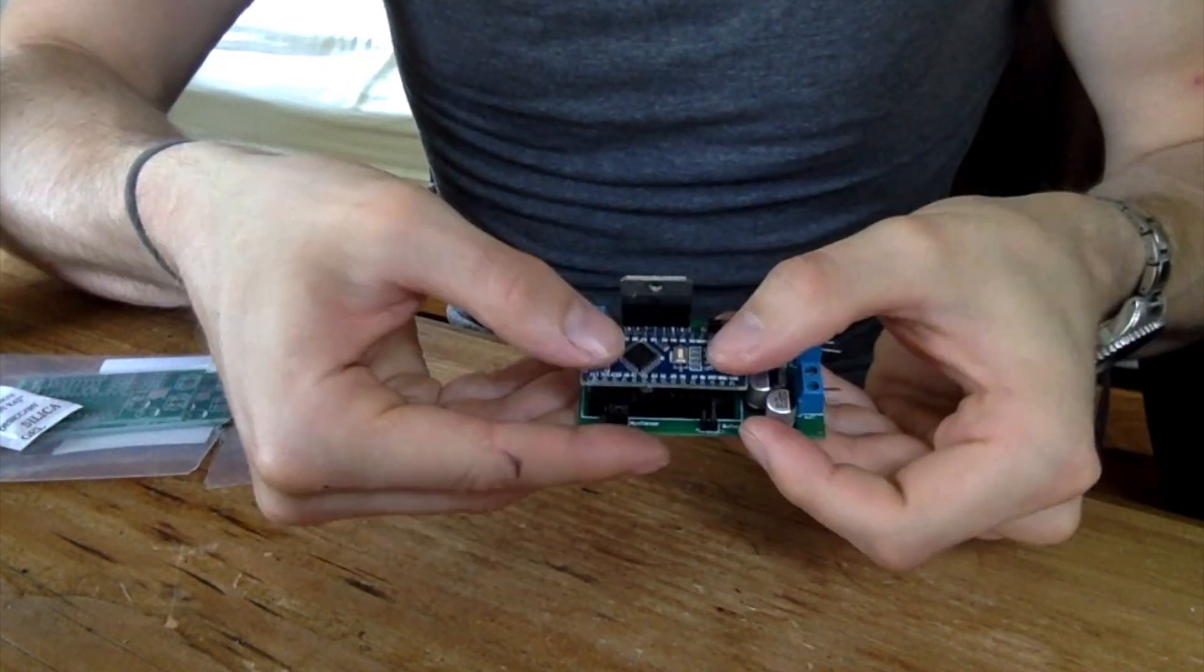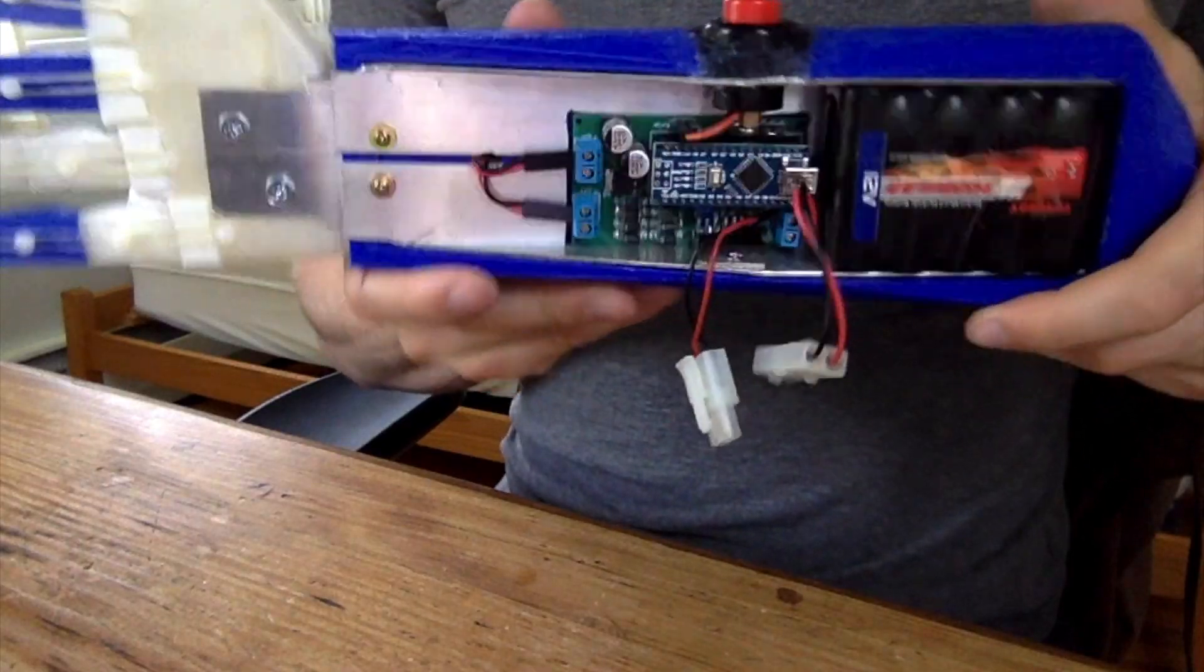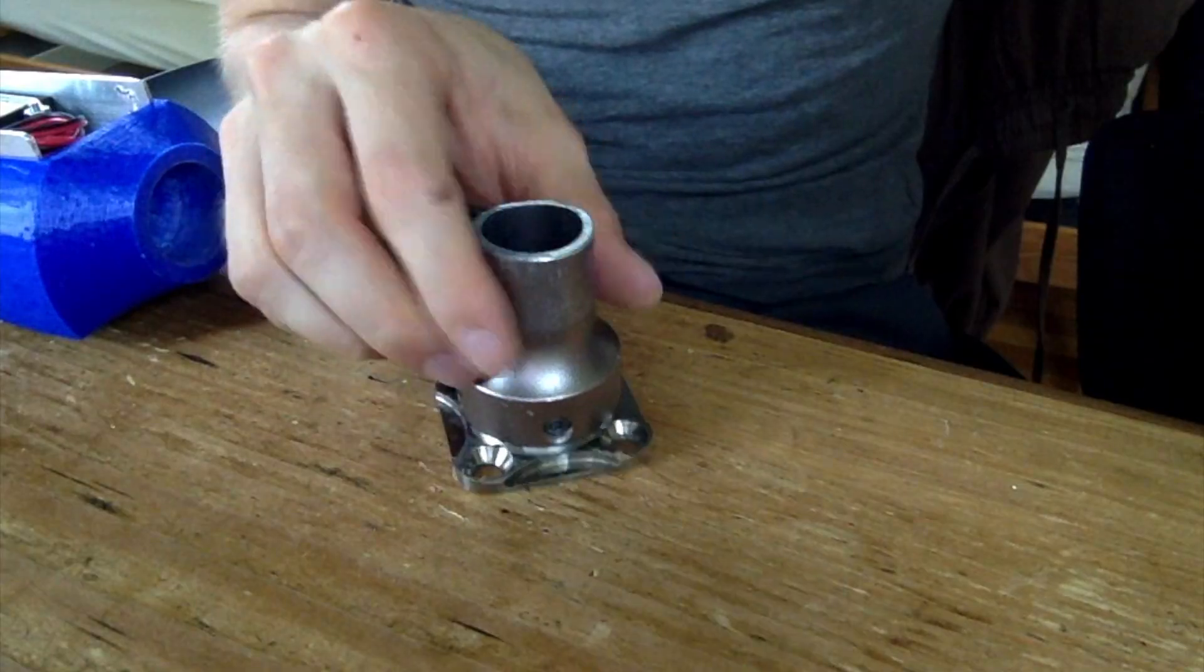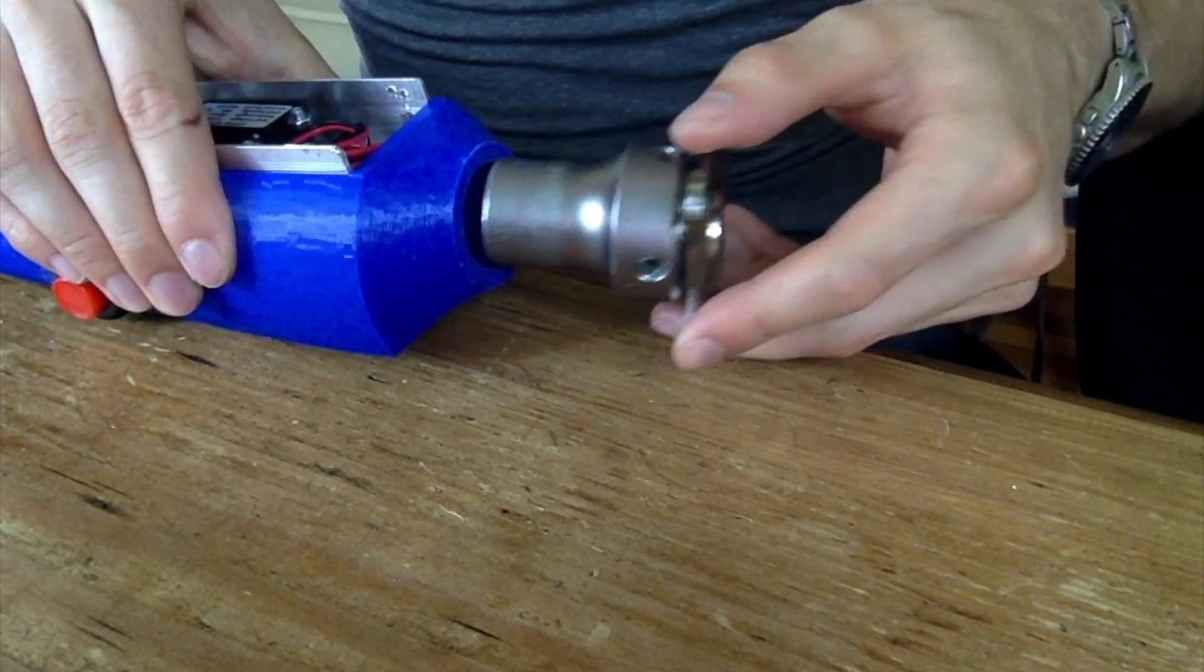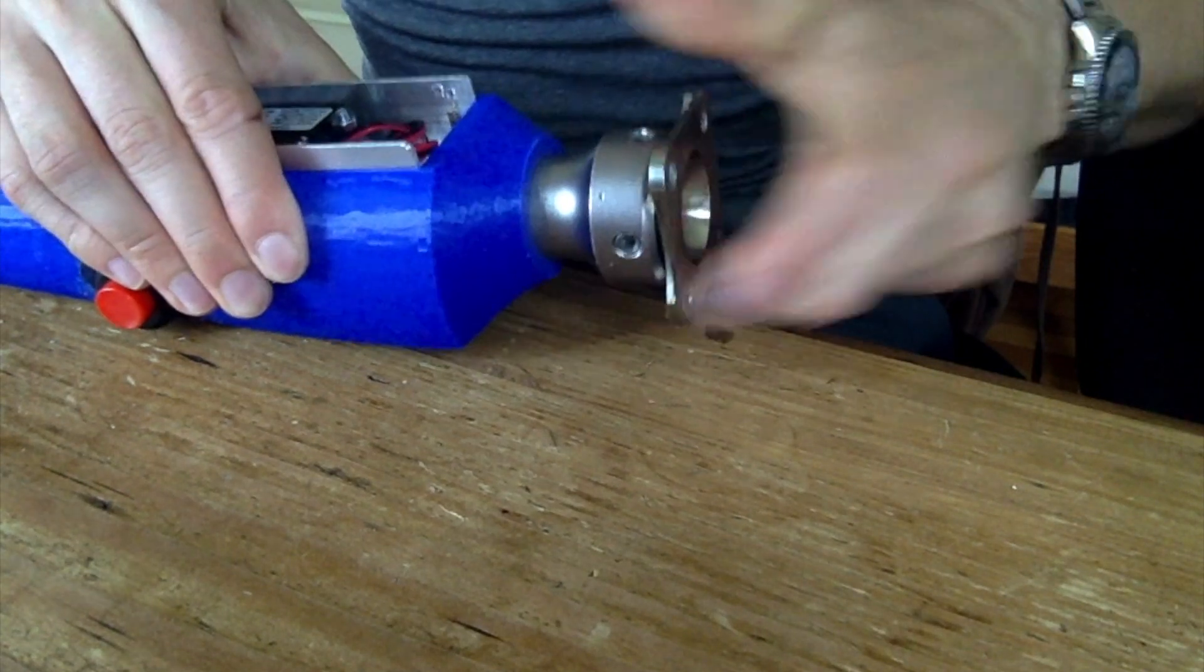The Arduino Nano fits right into place, and the whole circuit is screwed onto the housing. Finally, I add the prosthesis adapter onto the back of the housing. I'll fix this more permanently once we have a more complete version.